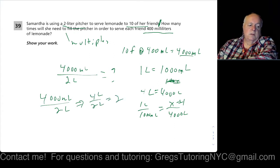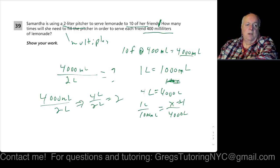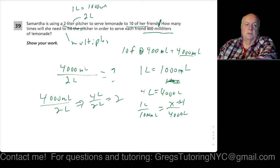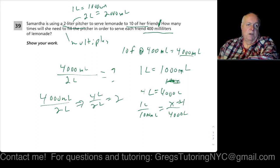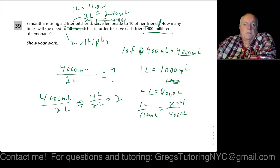So we convert the expression from 4,000 milliliters over 2 liters into 4 liters over 2 liters, which equals 2. She needs to fill the pitcher twice. We could also have converted the 2-liter pitcher: since 1 liter is 1,000 milliliters, 2 liters is 2,000 milliliters. Either way, the same division applies and gives us the same result.